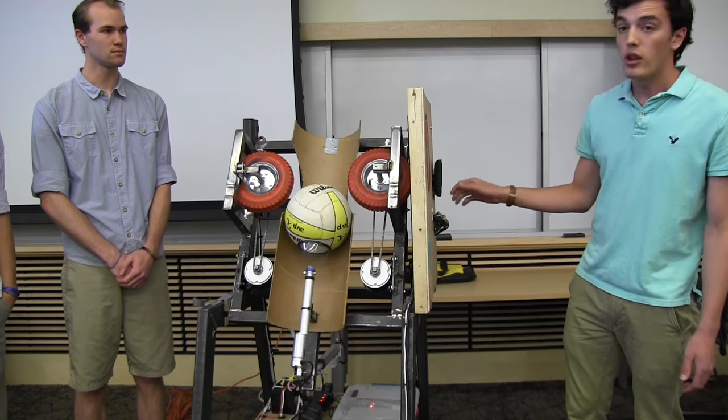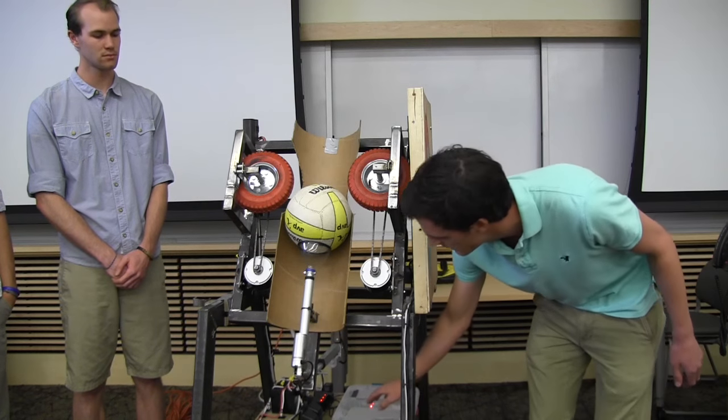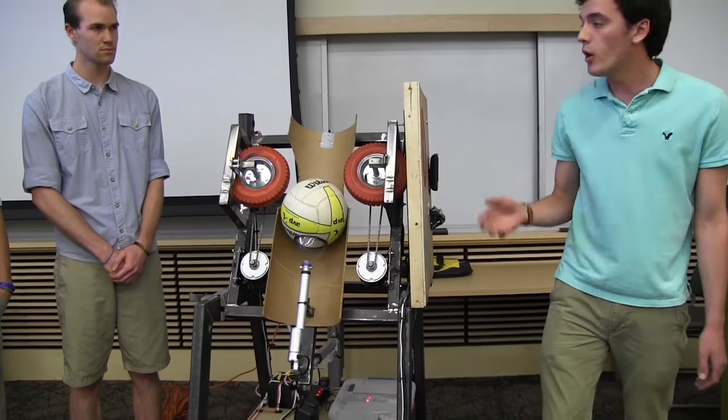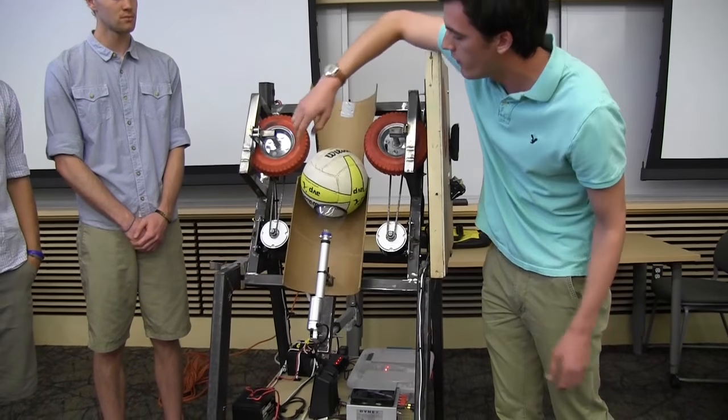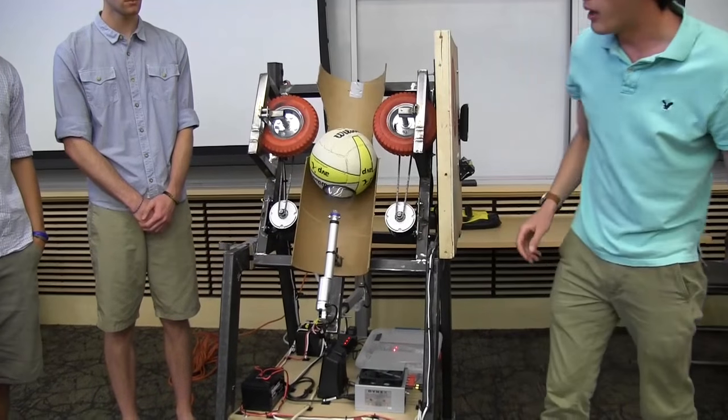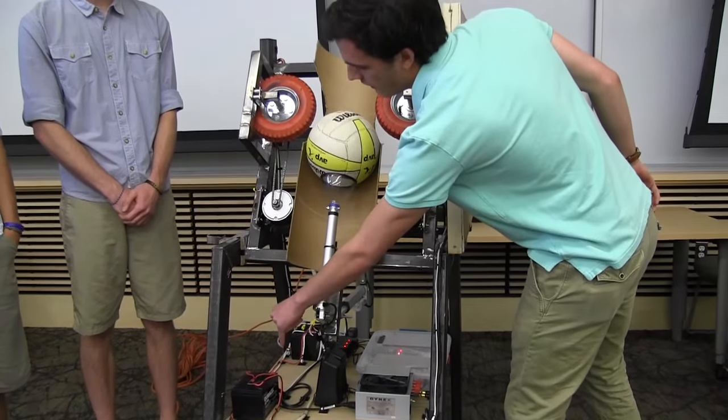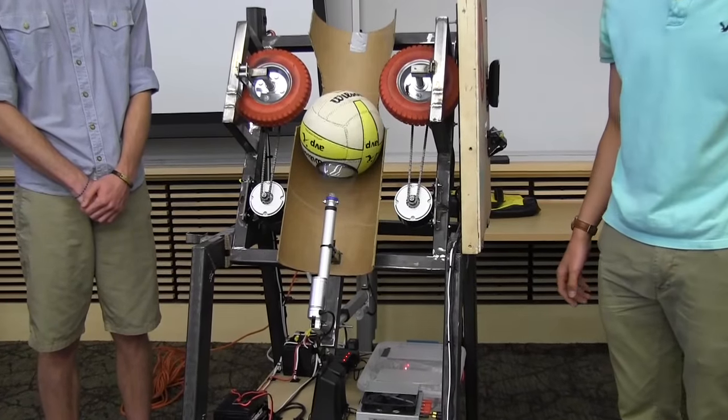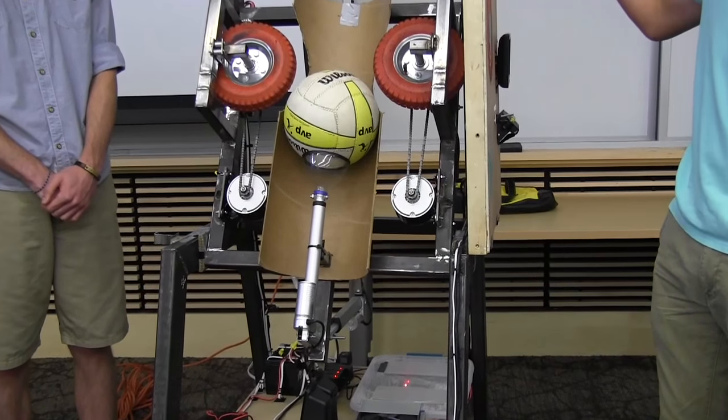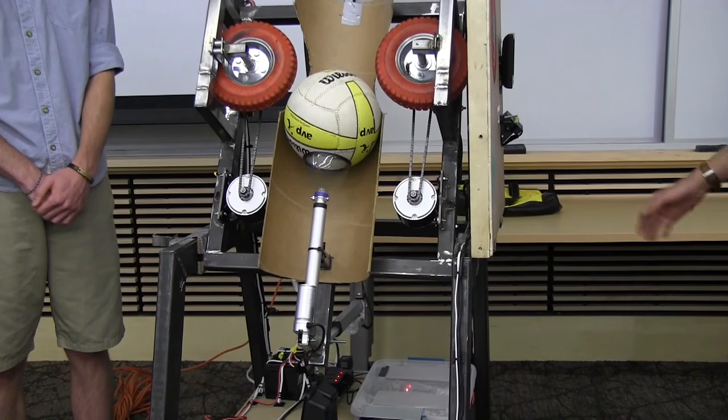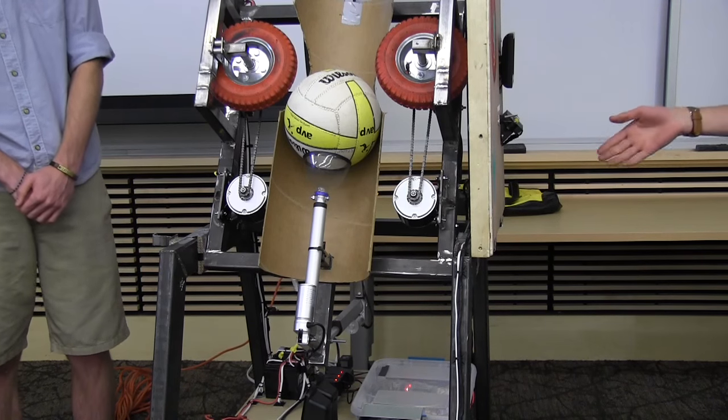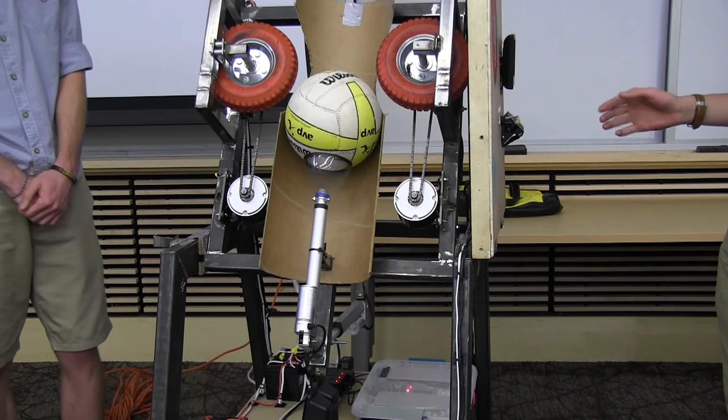Once you actually do set a launch, what that does is it sends a signal over to our Arduino Uno, which is controlling both of these 24-watt motors here. Those motors are powered off of these two 12-volt batteries in series with each other to give a lot of power since we needed a lot for the set to come out. And then that launch signal is sent to the PIC, which controls the final linear actuator system.